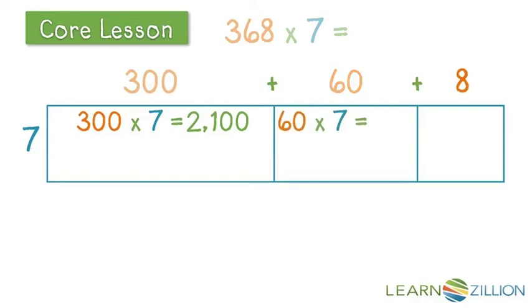6 times 7. 6 times 7 equals 42. 60 is 10 times bigger than 6. So, 420.